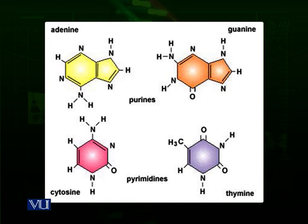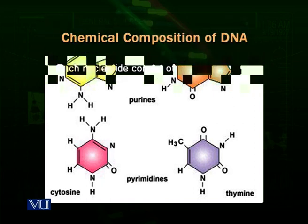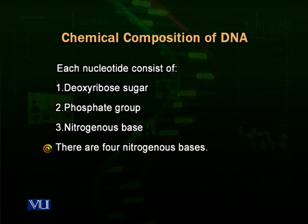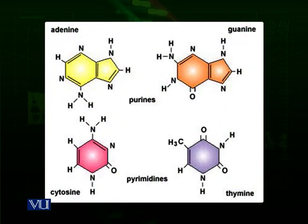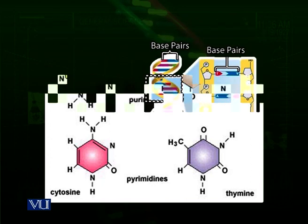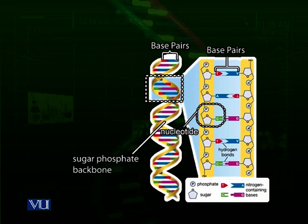We call them nitrogenous bases because they contain many nitrogen molecules within their structures. According to these nitrogenous bases, we categorize nucleotides into four types: those with adenine, guanine, cytosine, or thymine. In DNA, thymine always pairs with adenine and guanine always pairs with cytosine — giving us G-C pairs and A-T pairs.